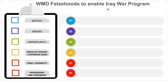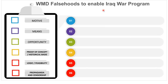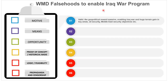Now, weapons of mass destruction — the falsehoods used to enable the Iraq war program. You'll all be familiar with this one, but let's check it with the checklist. Motive: absolutely — similar to the last one. Massive reward: enabling the war, control of oil, geopolitical advantage, terrain gain, Middle East security objectives. There's obviously a huge motive to drive this narrative to enable huge achievements. Means: yes — the USA has dominance in the geopolitical sphere, clearly enabling fraud at this scale, with huge standing in the United Nations. The means are there.